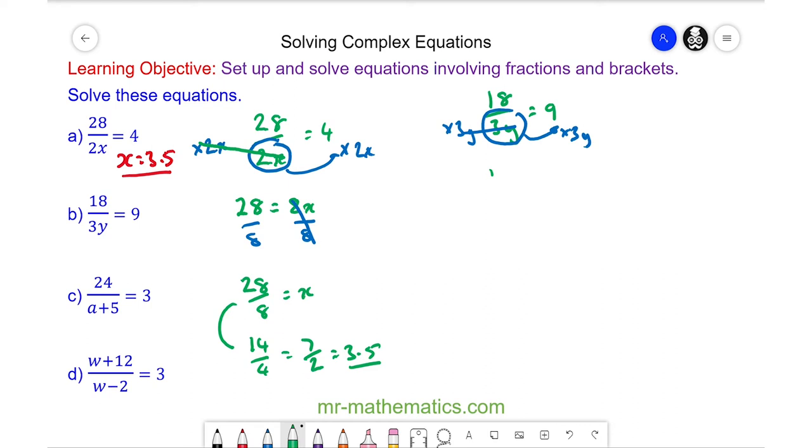So we have 18 is equal to 9 times 3y. We can divide both sides by 27 and these will cancel. So y will equal 18 divided by 27 which simplifies to 2 thirds.